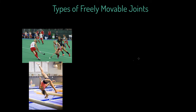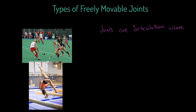Let's start to think about different types of freely movable joints. Joints are articulations — what I mean by that is they are the coming together of bones, where two or more bones meet, and at that articulation there is movement. We've got loads of examples in the human body, but we're interested in the freely movable ones, or what we might refer to as the synovial joints.